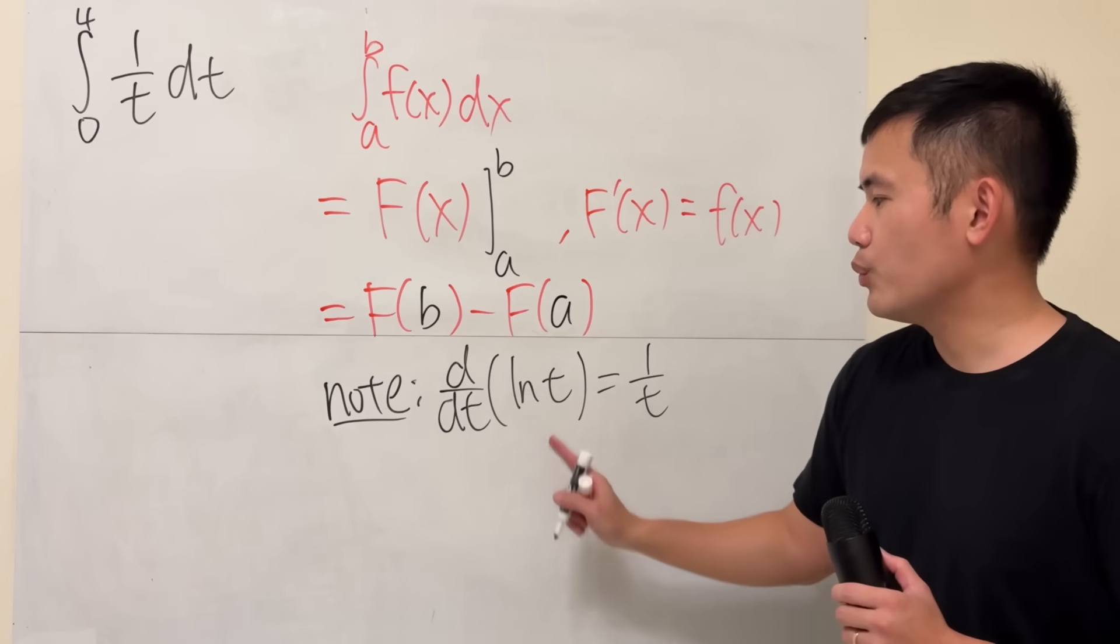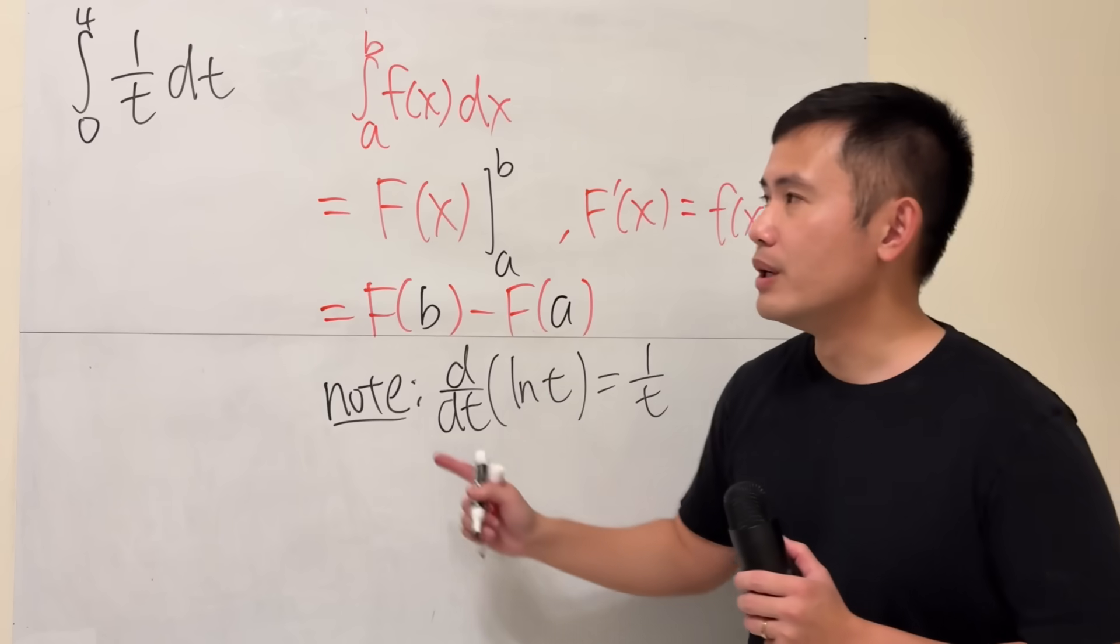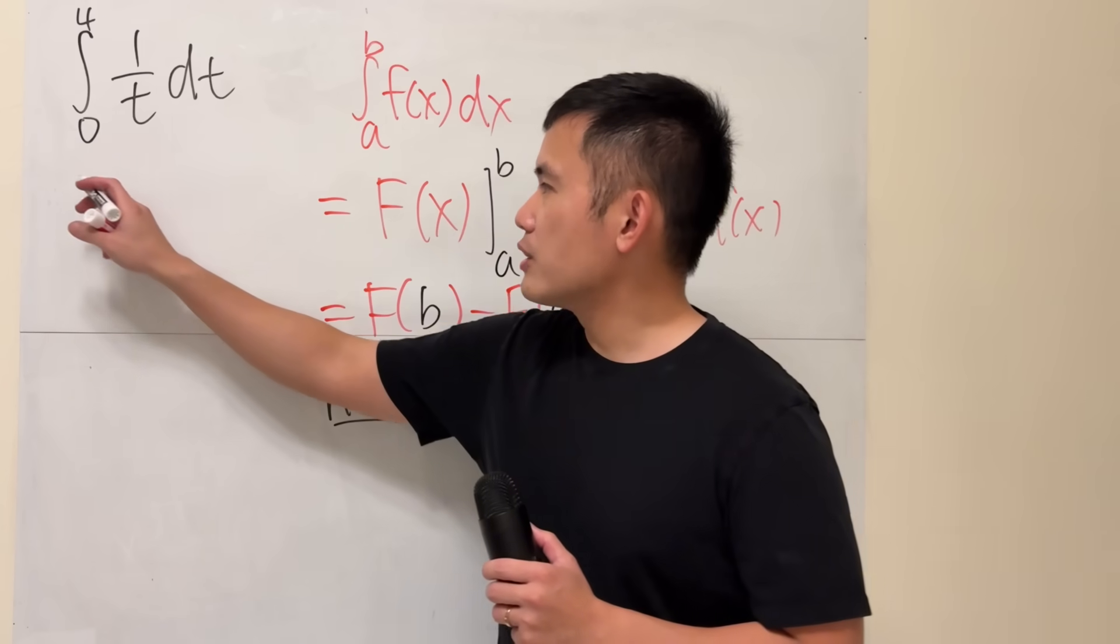And here, we just need 1 over t. We don't need the absolute value because we don't have negative numbers.